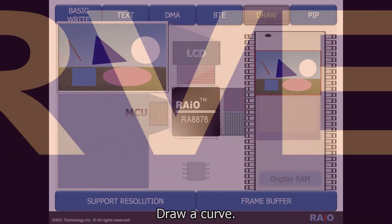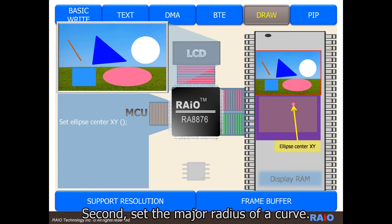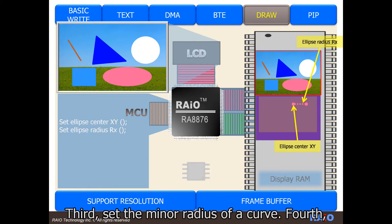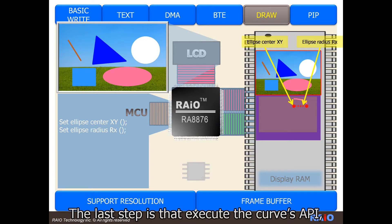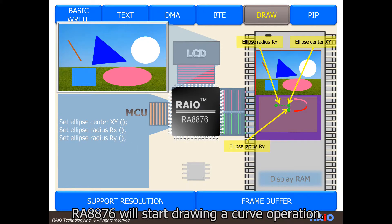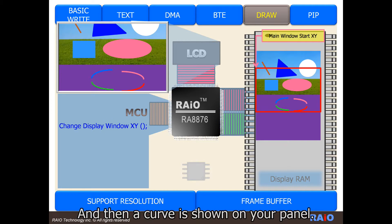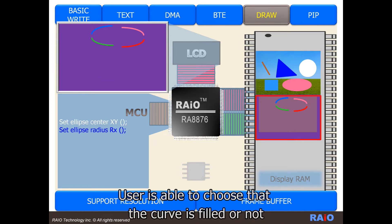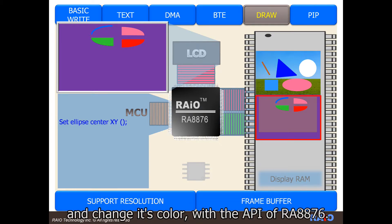Draw a curve. First, set the center point address for the curve. Second, set the major radius of the curve. Third, set the minor radius of the curve. Fourth, choose the part selection for the curve. The last step is to execute the curve's API. RA8876 will start drawing a curve operation, and then a curve is shown on your panel. User is able to choose whether the curve is filled or not and change its color with the API of RA8876.